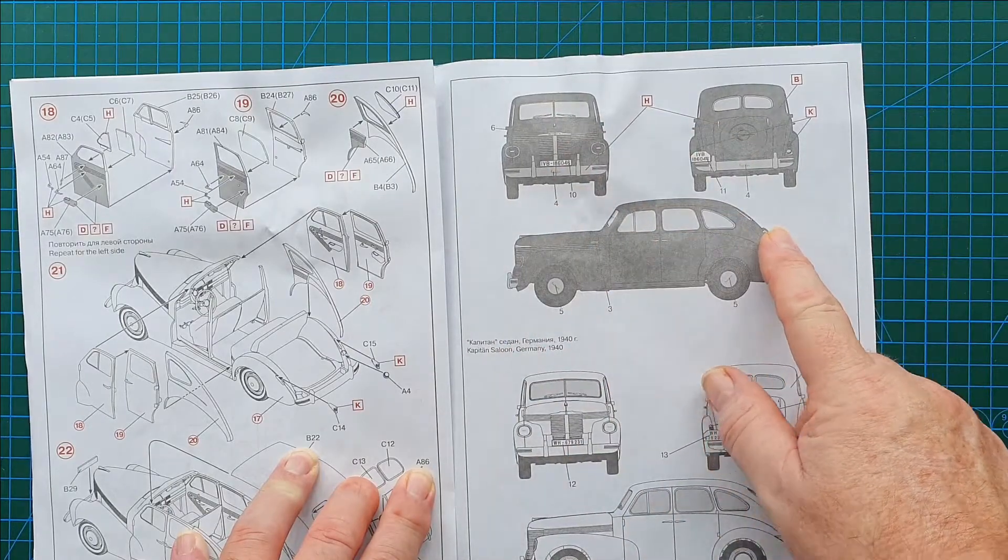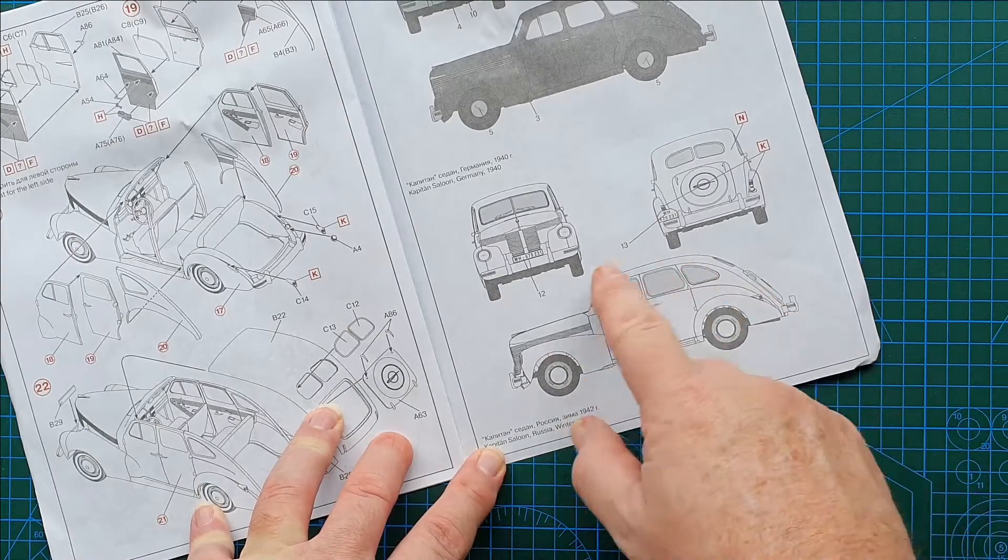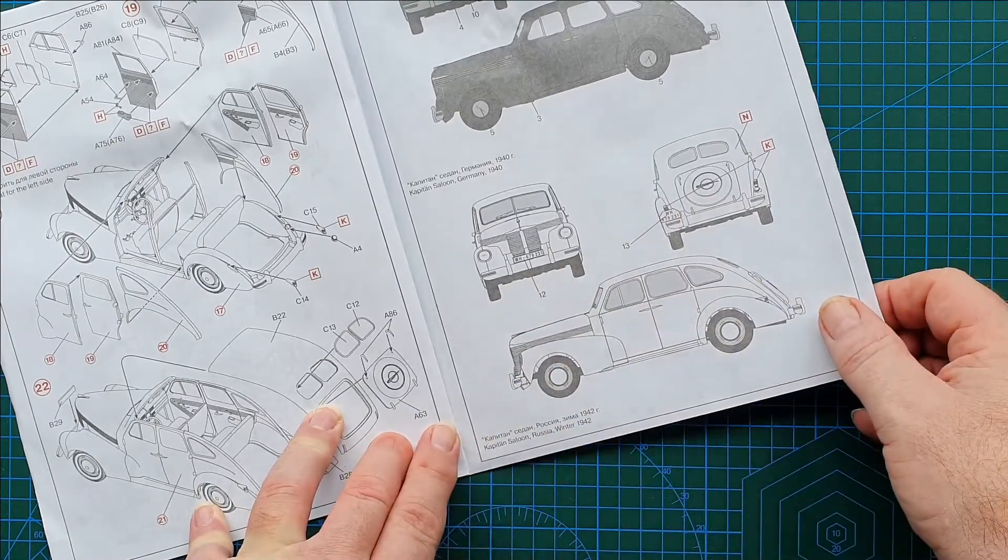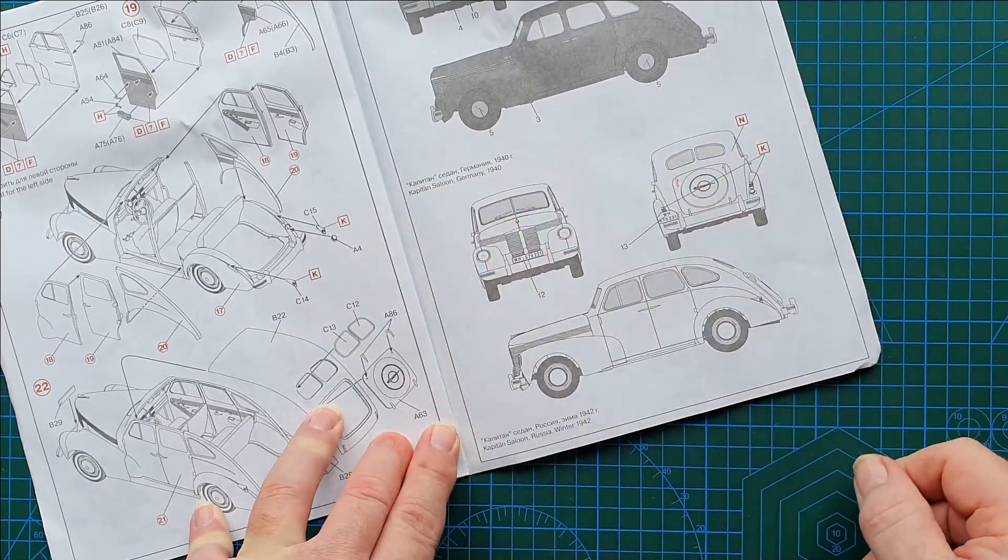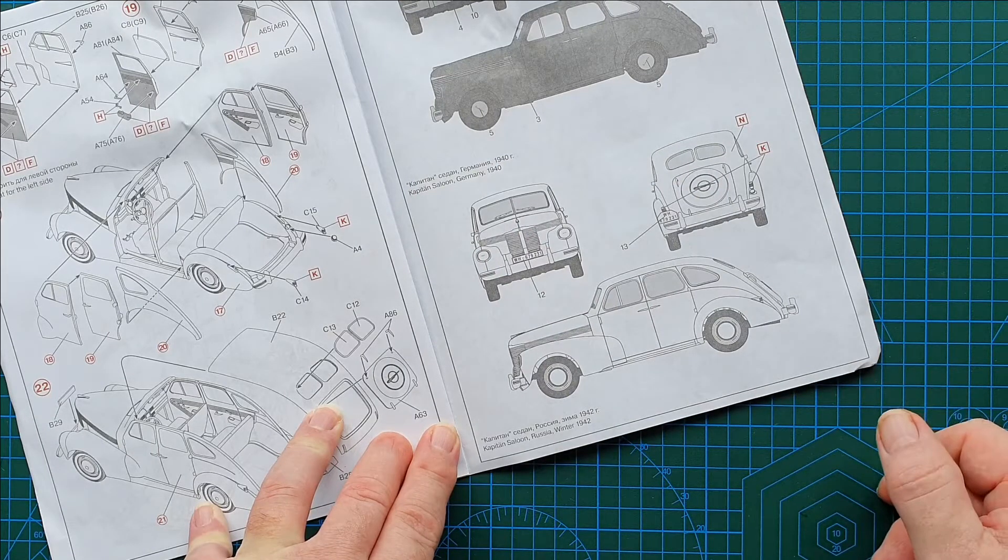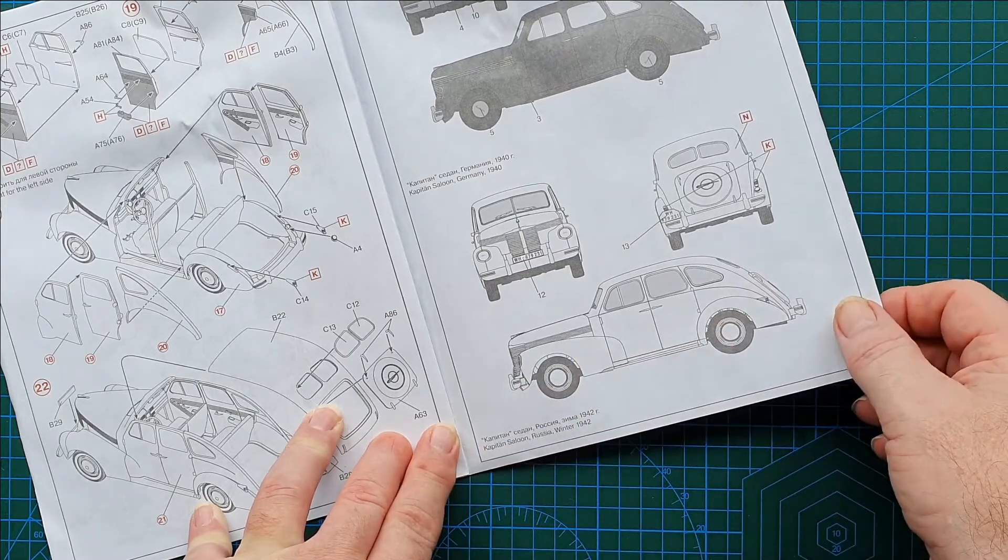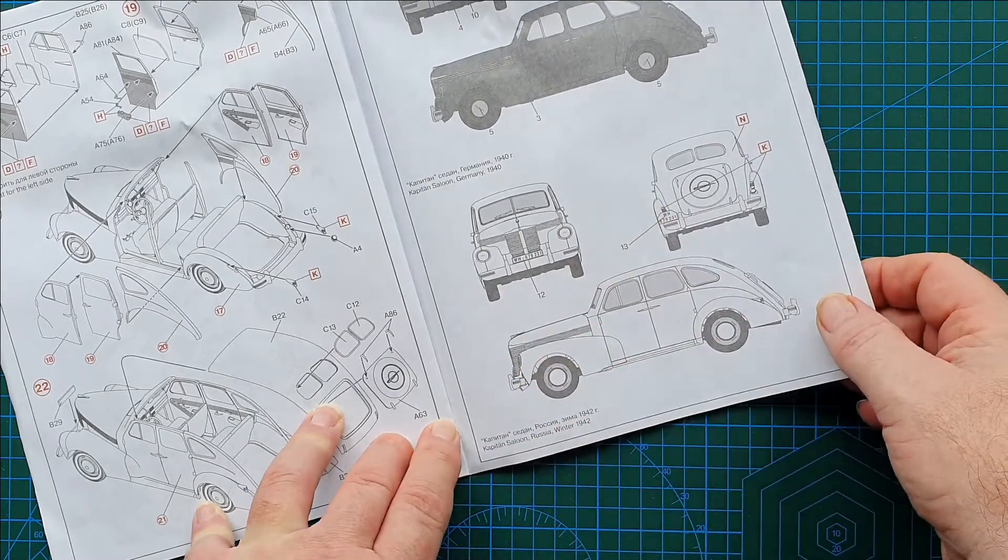Russia winter 42, so it's all over white. I would paint it all over either dark grey or Luftwaffe grey or something like that and then whitewash it, rather than just painting it completely white like they seem to have done here.